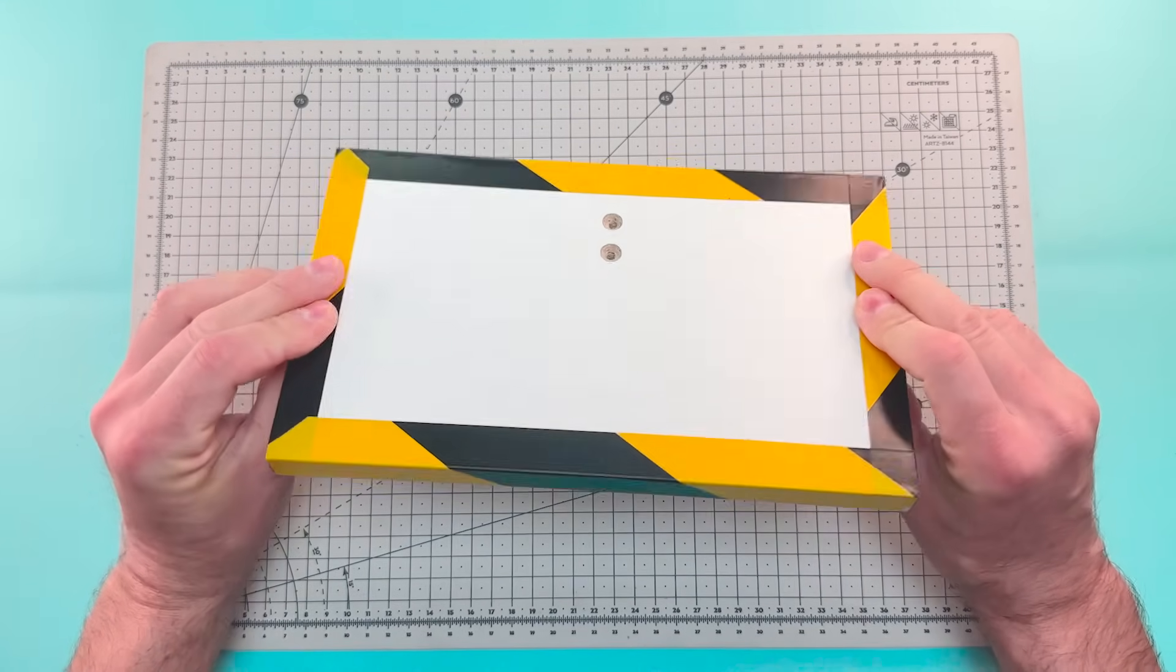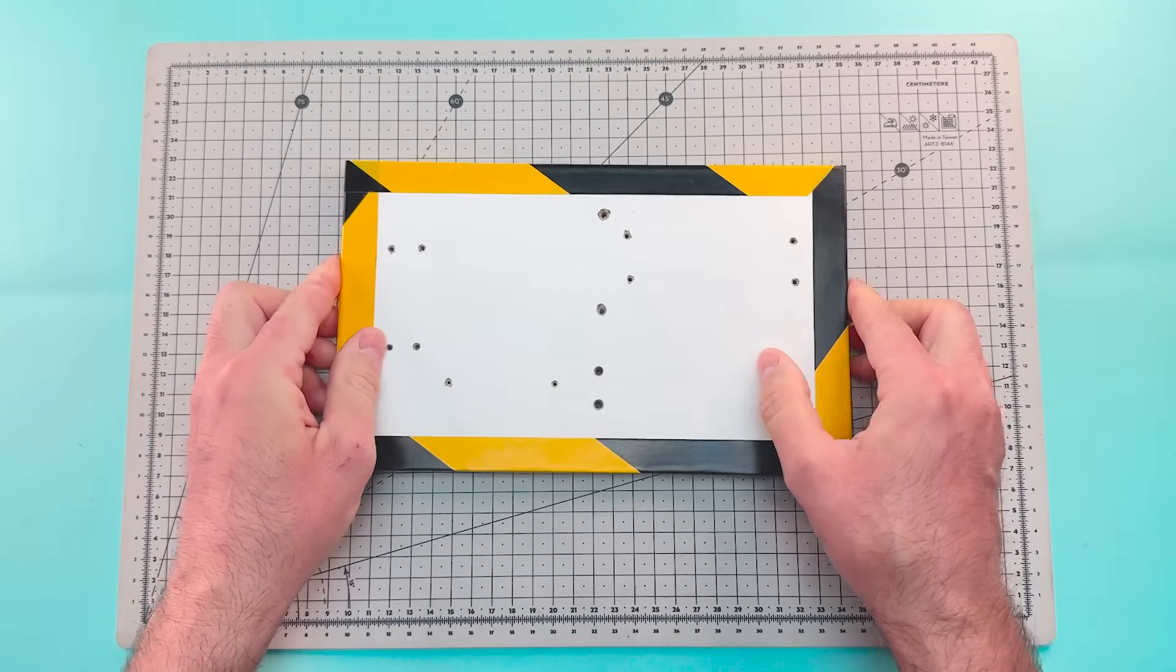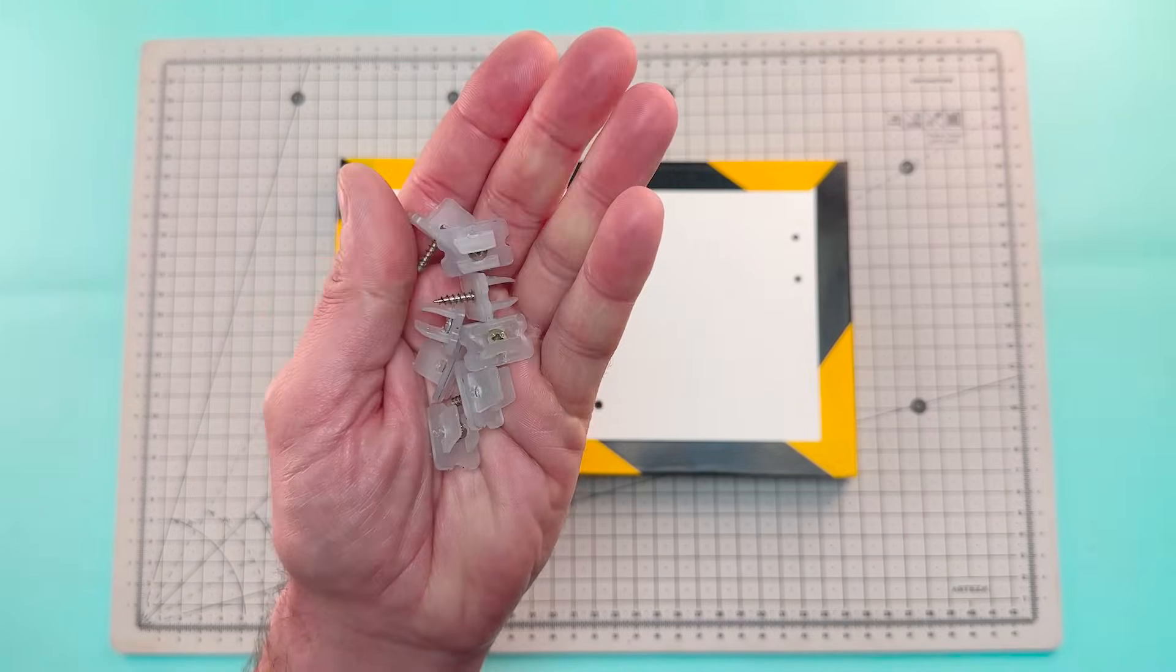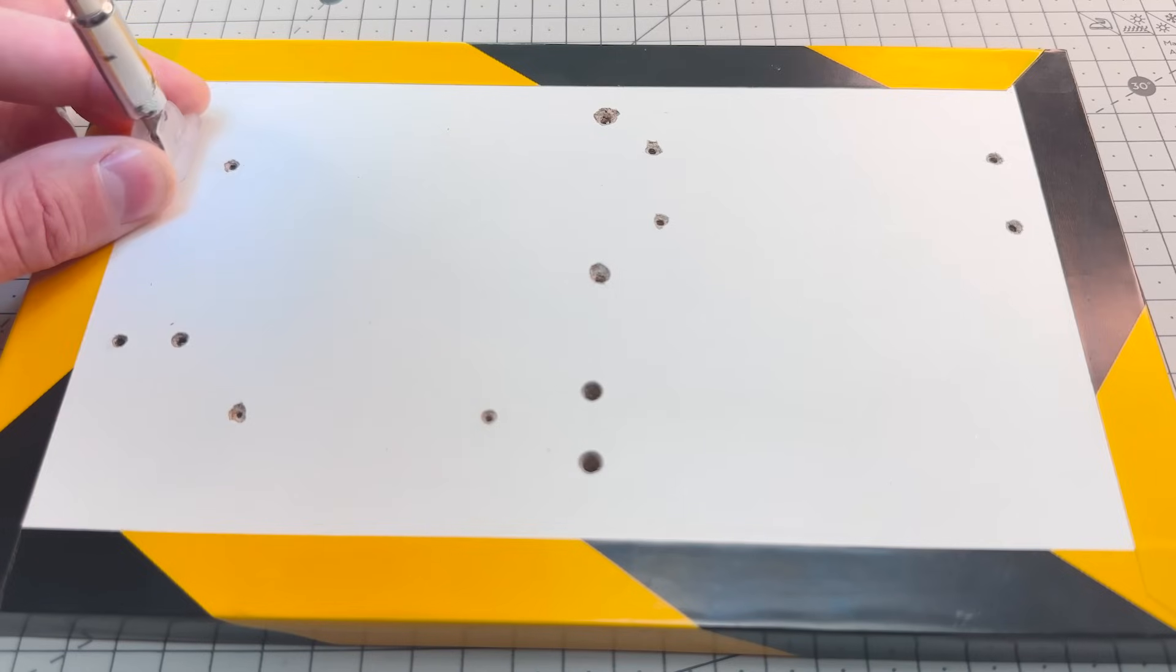Now we're going to attach the components to this small wooden structure. We've already made the holes we'll need, but you can drill them to fit your own parts.